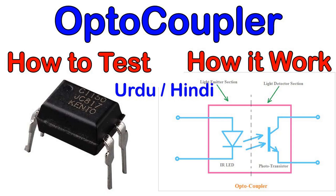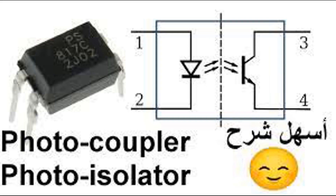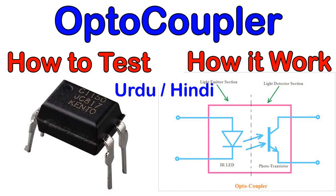The input section's LED emits light directed toward the optical barrier, while the output section's photosensitive component — a phototransistor or photodiode — is positioned on the other side, detecting that light and generating an electrical signal. Because there is no direct electrical connection between the two sections, electrical signals cannot flow directly between them. This isolation prevents the transfer of electrical noise, voltage spikes, or other disturbances from one side of the circuit to the other, which is particularly important where safety or protection against voltage differences is critical.